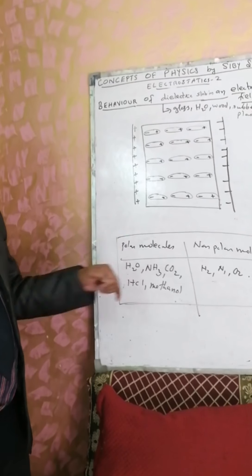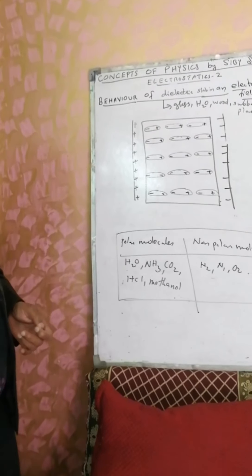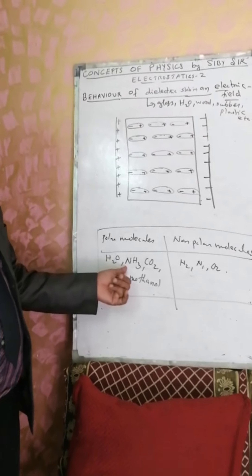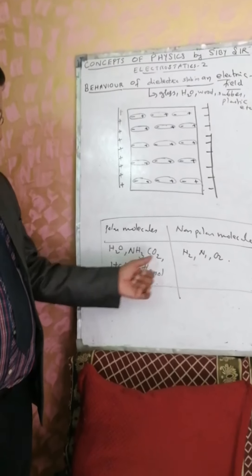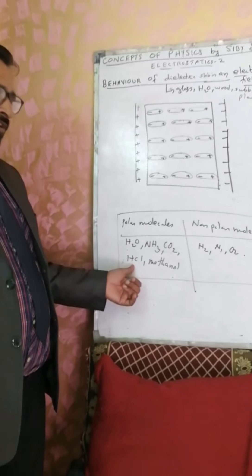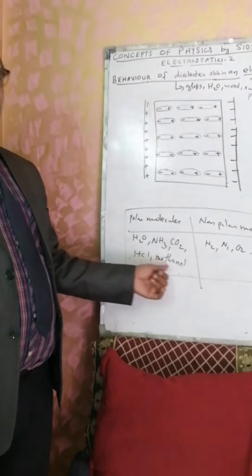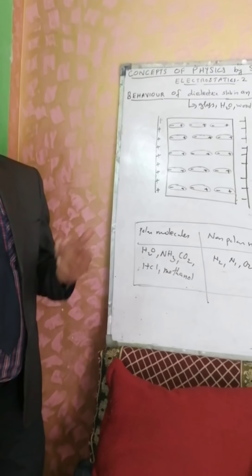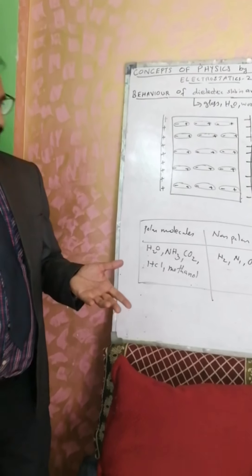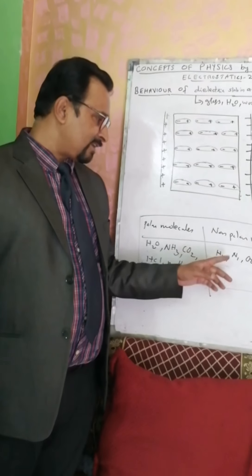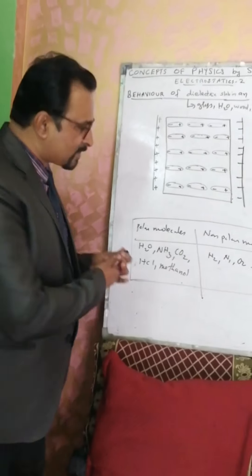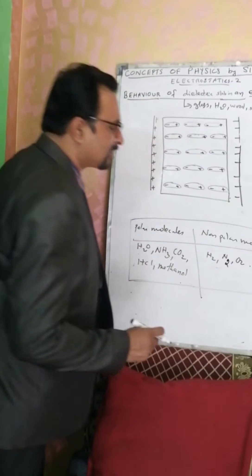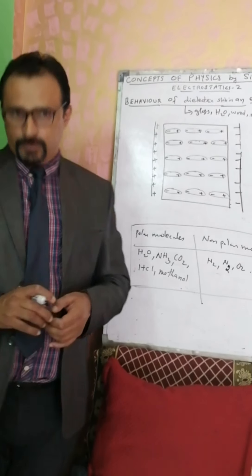Some molecules like water, ammonium, carbon dioxide, hydrochloric acid, methanol, etc., behave like electric dipoles. Whereas molecules like hydrogen, nitrogen, oxygen, etc., do not behave as electric dipoles.